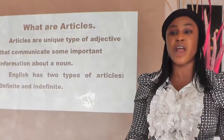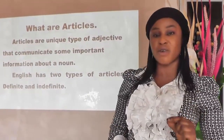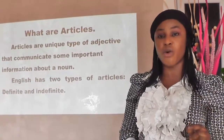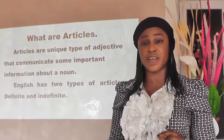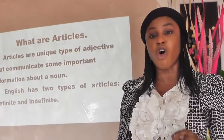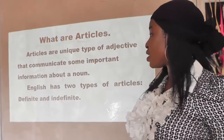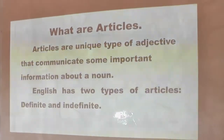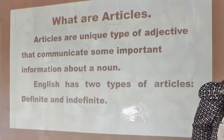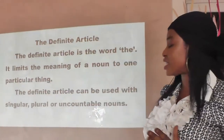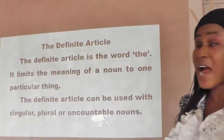This is a formal way of telling us that articles let everyone know whether a noun is unique or specific in a sentence or not. English has two types of articles: definite articles and indefinite articles. We're going to discuss these two types of articles in detail.